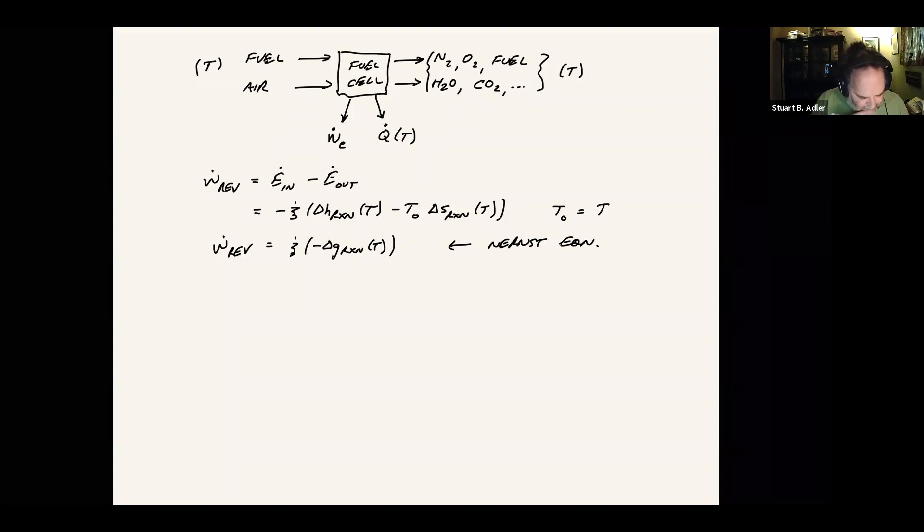So if we further break this down, if I wanted to think about an exergetic efficiency, we could define that and I'm going to define it as Epsilon exergetic. This is going to be equal to the electrical work that we're producing divided by this quantity that we're describing here, which is W rev. And this will be the N F V cell times N dot fuel times the utilization, whatever amount of fuel that we're actually using times the feed times the efficiency of the use of that fuel. And then we're dividing that by the W dot rev, which we're saying is equal to minus delta G of the reaction times N dot fuel. N dot fuels cancel.